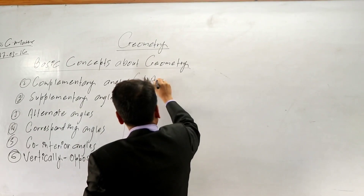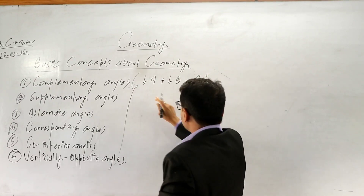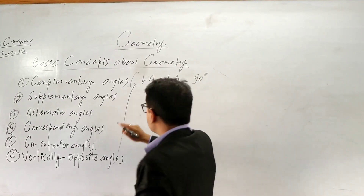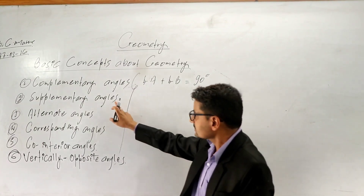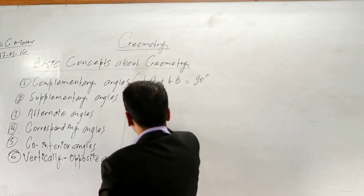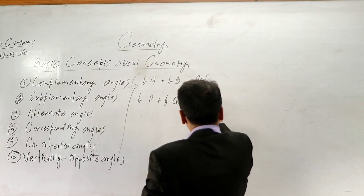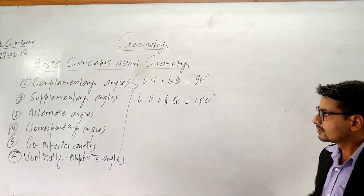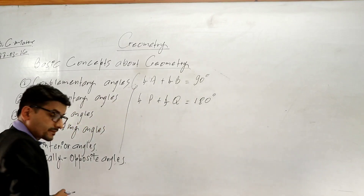Suppose angle A plus angle B equals 90 degrees, then angle A and angle B are called complementary angles. Supplementary angles means if the sum of any two angles is 180 degrees, in that condition we say they are supplementary angles. For example, angle P plus angle Q equals 180 degrees — then these two are supplementary angles.